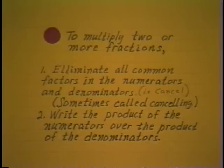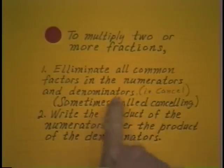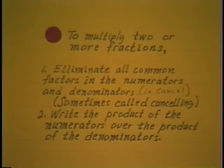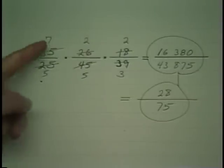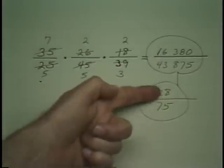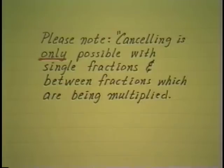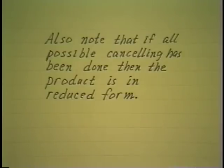To multiply two or more fractions, eliminate all common factors in the numerators and denominators. That's what we call canceling. Write the product of the numerators over the product of the denominators. In short, cancel first, then multiply the tops to get the new top, the bottoms to get the new bottom. Now, please note, canceling is only possible with single fractions and between fractions which are being multiplied, a very important note for later lessons. Also note that if all possible canceling has been done, then the product is in reduced form. That's a very handy device.